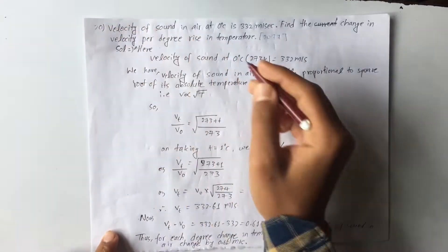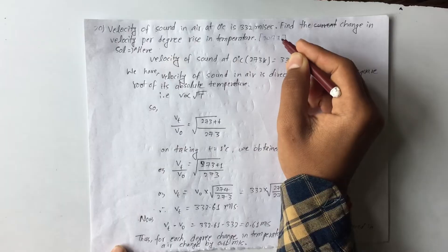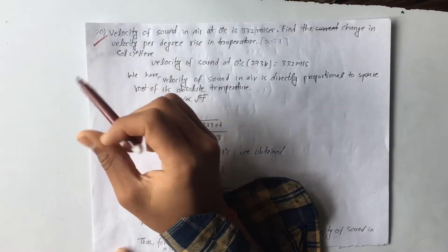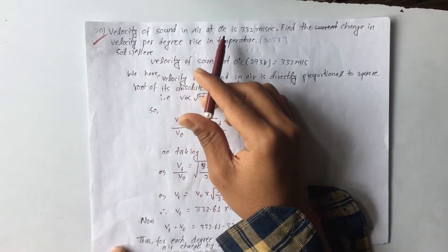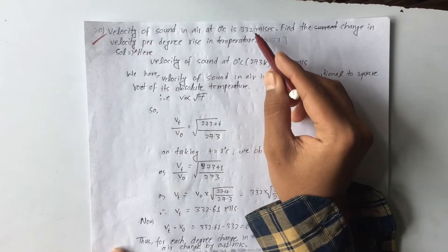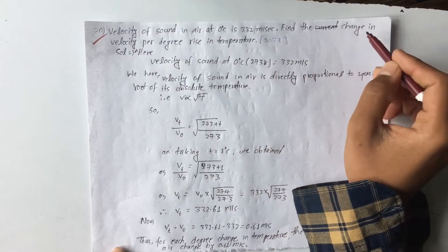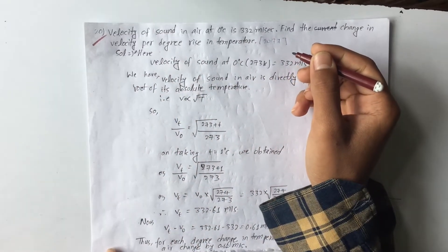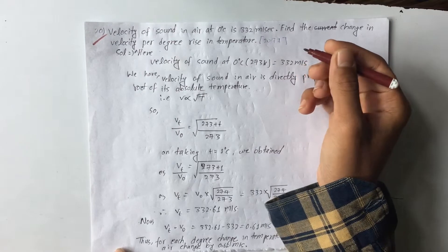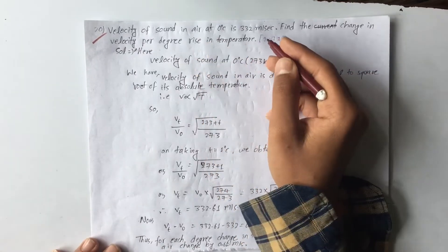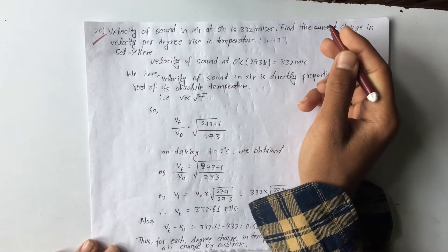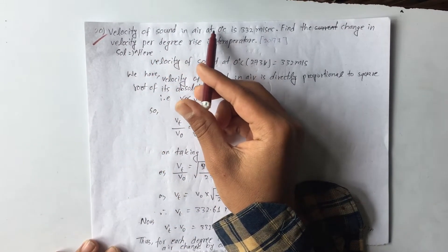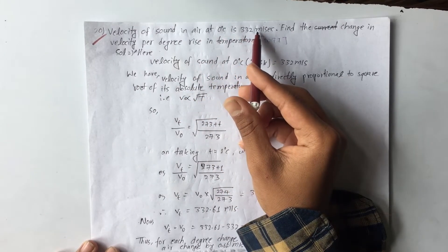Hello. Today I'm going to talk about the physics of sound. The velocity of sound in air at 0 degrees Celsius is 332 meters per second. Find the change in velocity per degree rise in temperature. If the temperature is 1 degree Celsius, how much will the velocity change in meters per second?